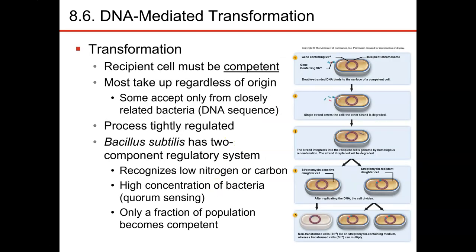For transformation to occur, the cell must be competent. A competent cell is one that can take up DNA. Not all cells are naturally competent. For example, E. coli are not competent naturally. We can make them competent by shocking the solution they're in, which breaks their cell wall just slightly enough so they can take in DNA, though it doesn't mean they will.